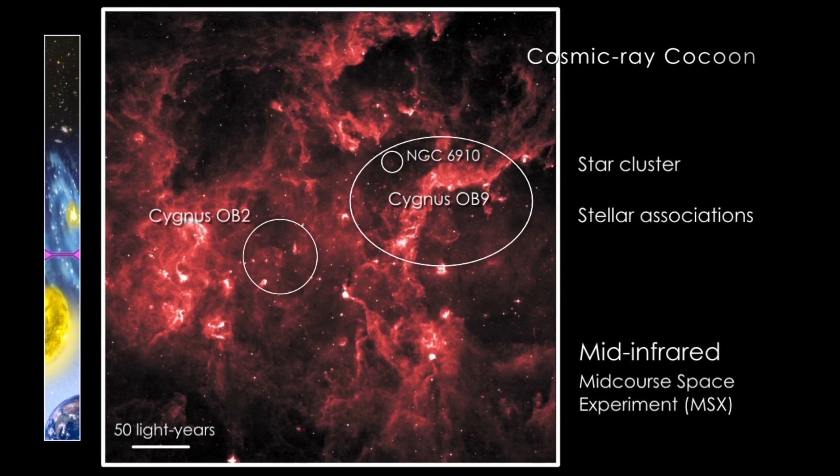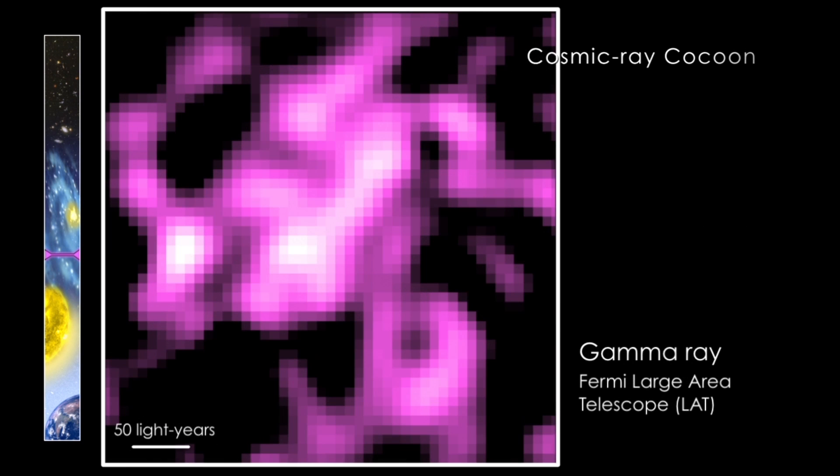Fermi found that star birth and death in the Cygnus X star factory corrals particles and boosts them to cosmic ray energies.